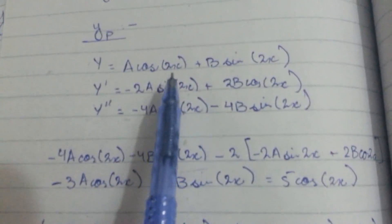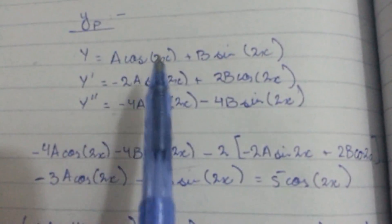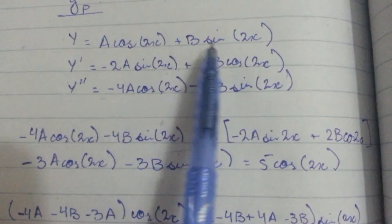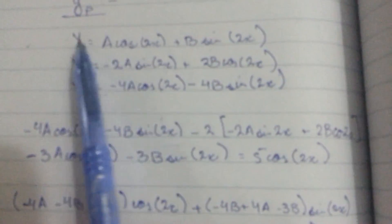So the yp of the equation is A multiplied by cos 2x plus B multiplied by sin 2x. We will substitute the value of A and B to find yp.